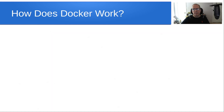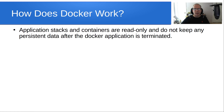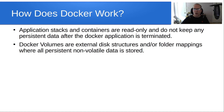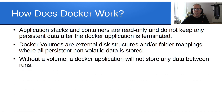Docker networks allow containers and stacks to communicate with each other in a private NAT or exposed to your main LAN. Application stacks and containers are read-only and do not keep any persistent data after the Docker application is terminated. If your Docker application does not use volumes, it loses all the data and won't remember anything from the previous run. Docker volumes are either external disk structures and/or folder mappings where all persistent non-volatile data is stored.